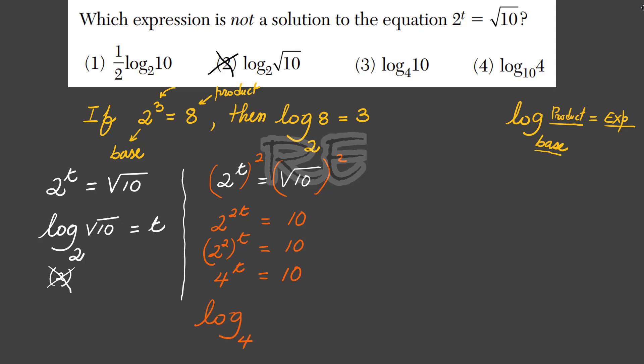In logarithmic form, log base 4 of 10 equals t. Therefore, option 3 is a solution. We need to cross out 3.